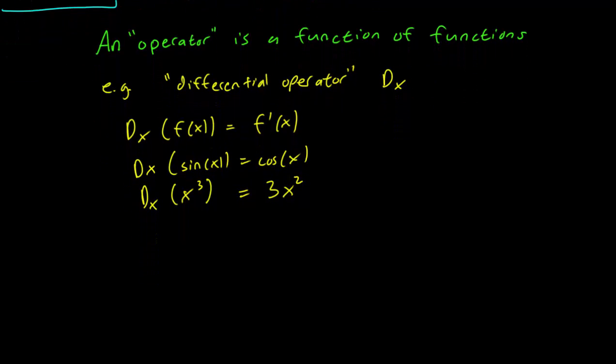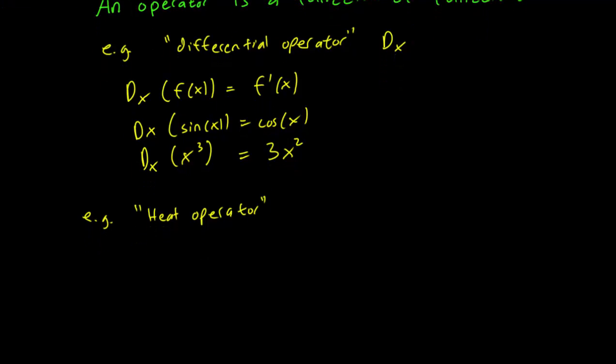Now, more useful for our purposes would be the heat operator. This is an important example. And what this does is that it allows us to express the heat equation in a different way. So the heat operator is written down as L and it takes a function u and it takes the partial derivative of it with respect to t and subtracts k times the second partial derivative with respect to x.